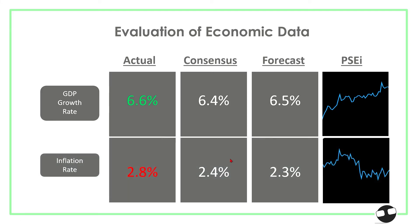Now consider a negative data example where the forecast is 2.3 and consensus is 2.4. Since this is negative data, we would want to see the figure lower. But if the actual comes in higher than both consensus and forecast, this can trigger negative sentiments in the market and drive the index to trade lower that specific day.